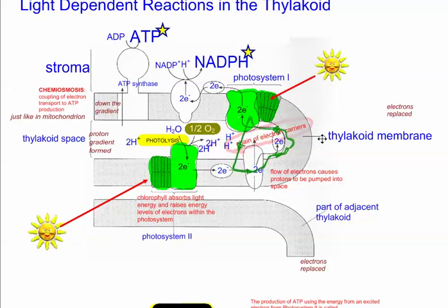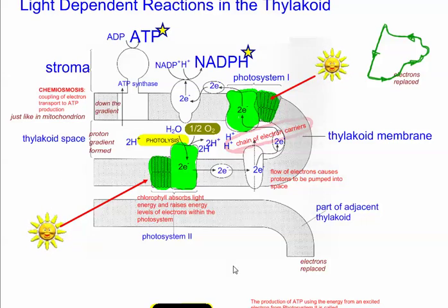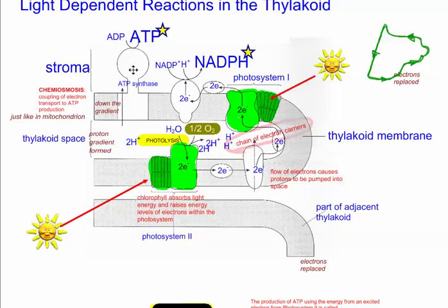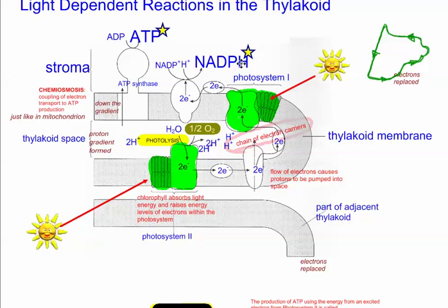So in summary: light energy is being used to excite electrons. The movement of these electrons helps create a proton gradient by moving protons into the thylakoid space, and this proton gradient is used to generate ATP. The movement of electrons also generates NADPH. Both ATP and NADPH are going to be key players in the light-independent reactions, which involve converting carbon dioxide to glucose in the Calvin cycle.